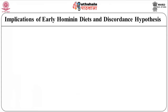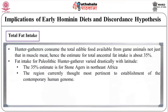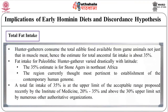Regarding total fat intake: hunter-gatherers consumed all edible food available from game animals, not just the muscle meat. Hence, the estimate for total ancestral fat intake is about 35%. Fat intake for Palaeolithic hunter-gatherers varied drastically with latitude. The 35% estimate is for Stone Agers in northeast Africa, the region currently thought most pertinent to the establishment of the contemporary human genome. A total fat intake of 35% is at the upper limit of the acceptable range proposed recently by the Institute of Medicine — 20% to 35% — and above the 30% upper limit set by numerous other authoritative organisations.